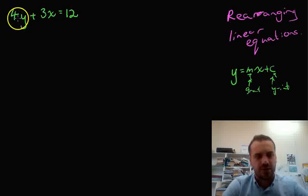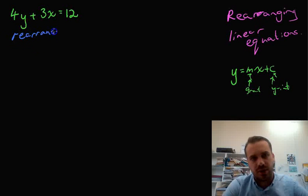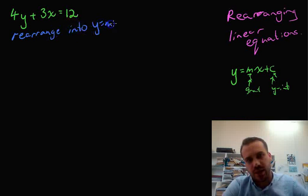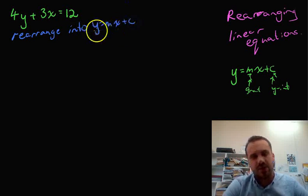So, for instance, this is written 4y plus 3x equals 12. Now, you might be asked a question that's something like rearrange into y equals mx plus c. So, rearrange into that form. Now, it's important to understand that y is all by itself, no numbers near it, and then there's something x plus another number.